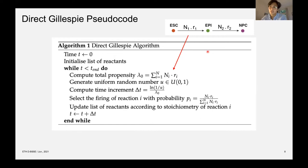And then we update the list of the reactants according to a given stoichiometry of the reaction channel. So let's say we've picked that the next reaction at time delta T is going to be reaction channel number two. So we're going from EPI to NPC. What we'll do then is remove an EPI cell from the system and add an NPC cell to the system.